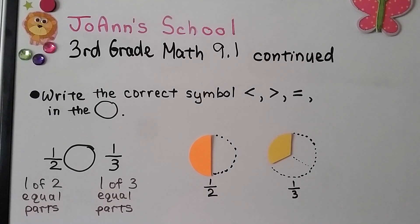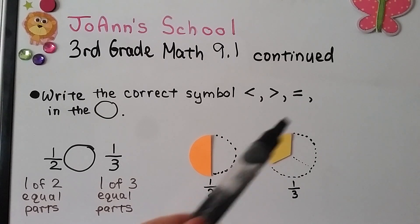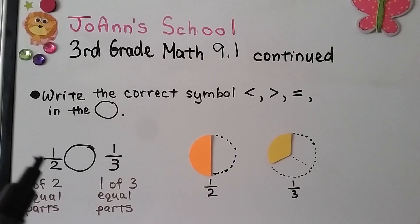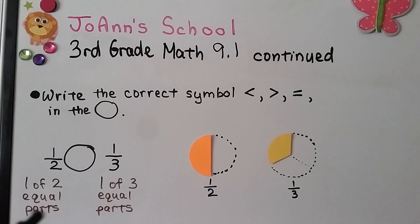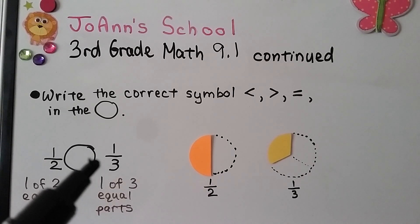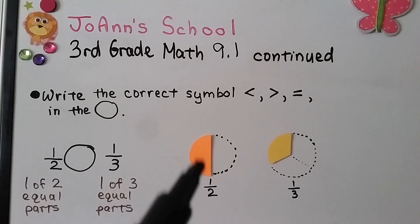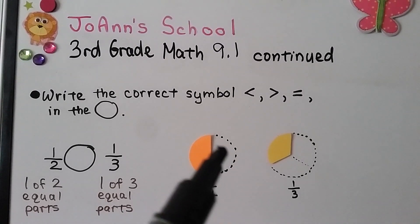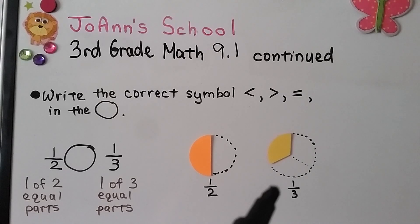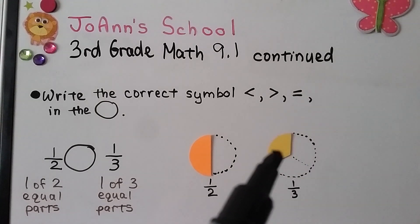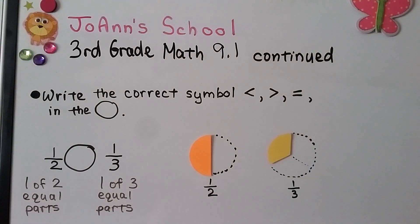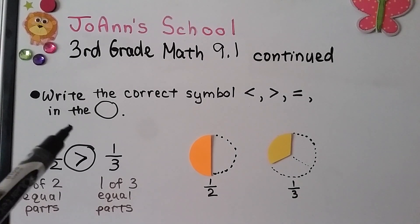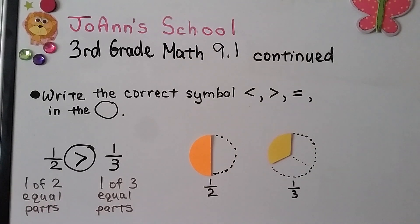We can write the correct symbol — less than, greater than, or equal to — in the circle. We're going to compare one-half and one-third. One-half means one of two equal parts; one-third means one of three equal parts. When we have one of three equal parts, they're cut into smaller pieces, because the same size circle is in three pieces instead of two. So we can see that one-half is greater than one-third. We put the large opening towards the larger fraction.